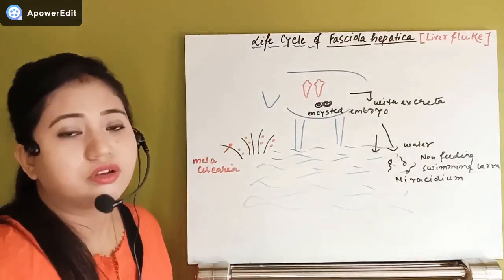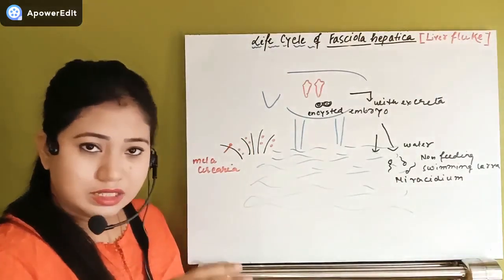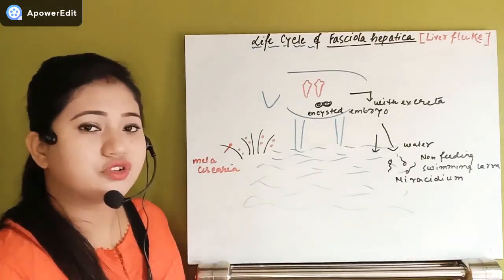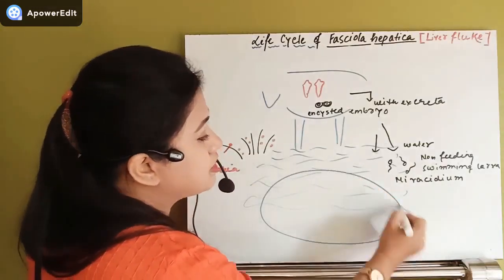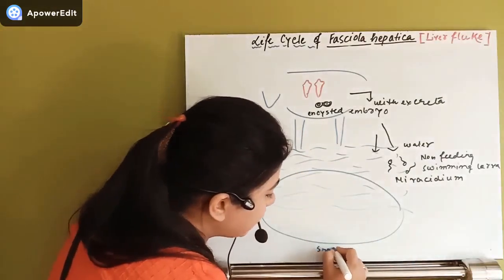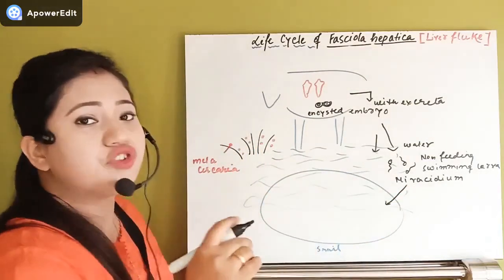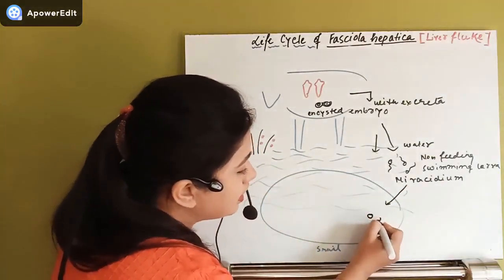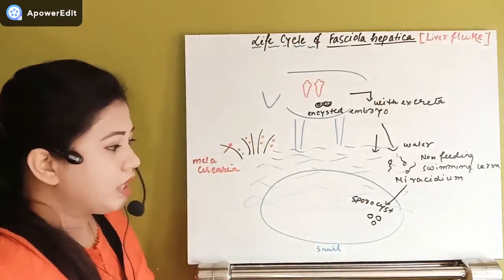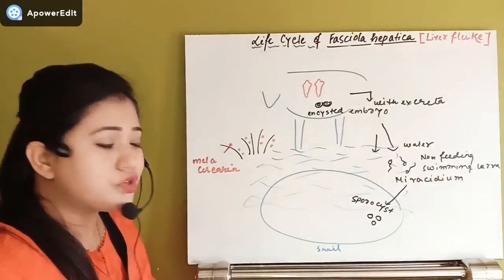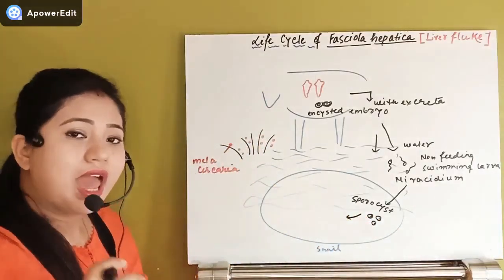The encysted embryo comes to the water in the excreta, sheds its cyst wall, and begins freely swimming as the miracidium larva. If this larva meets a snail or small fish in the water, it readily enters the snail's body. Inside the snail, miracidium transforms into the next larval stage — the sporocyst larva.